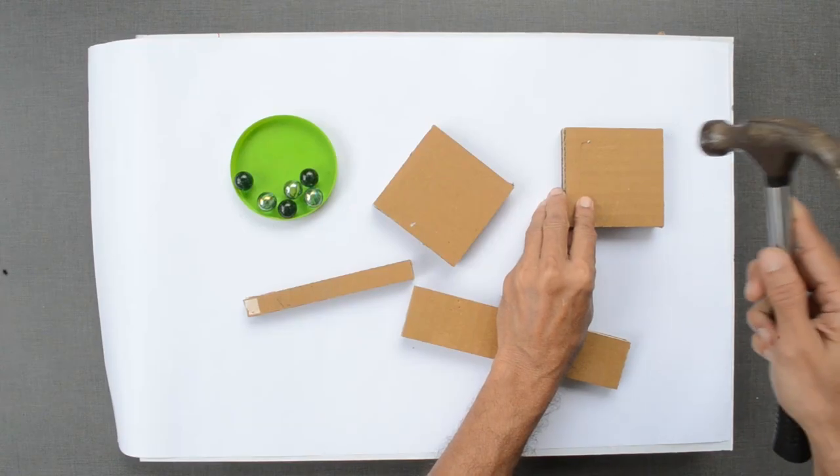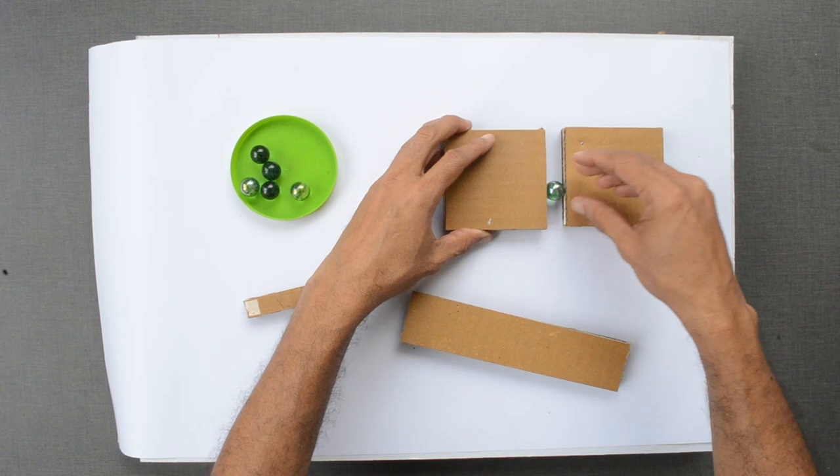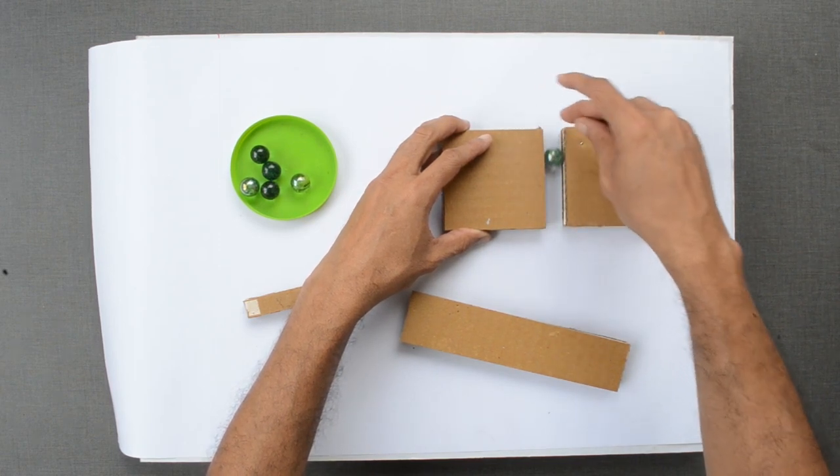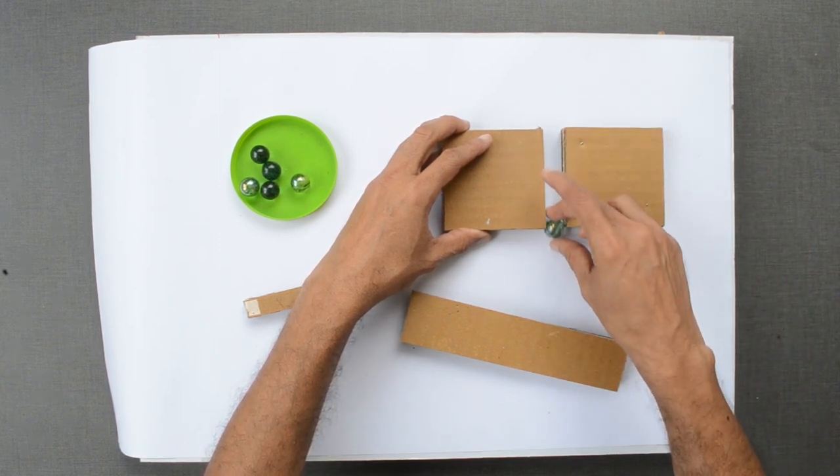Block feeder mechanism based on crank and slider can be modeled with the help of straws and marbles placed on a slightly tilted base.